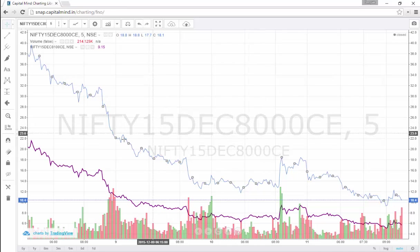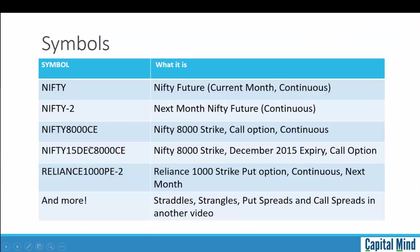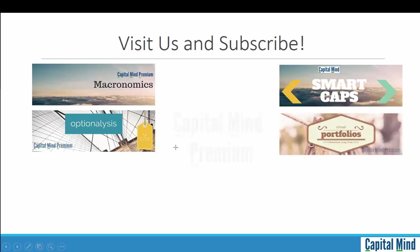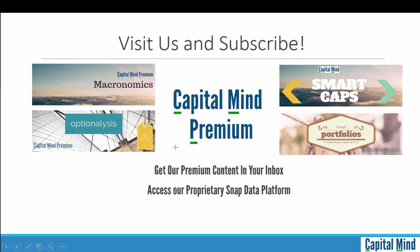We'll do a different video on that, but you're going to love what we have. Looking at all the symbols you can use: you can do NIFTY, NIFTY minus 2 for the next month continuous future, or NIFTY 15 December for a specific expiry date — that will not be continuous, only for the period that option has been traded. You can use any symbol with P, E, N, C and experience charting right on your browser. We hope you enjoy this — do visit us, we've got a ton of stuff for you. We've got premium as well, which allows you to see this and the analysis on our FNO portfolios, and of course the Snapdata platform. CapitalMind.in — subscribe. We hope you like this.